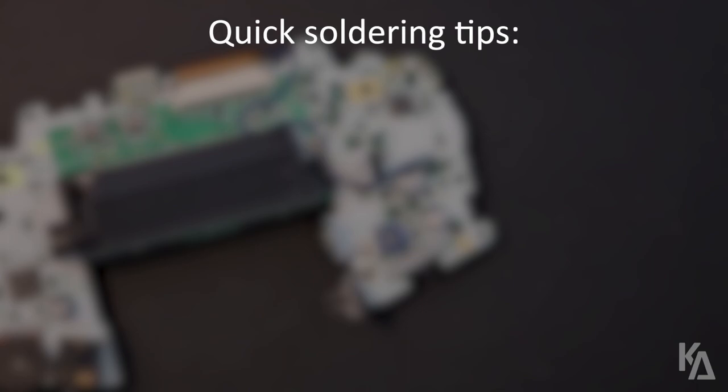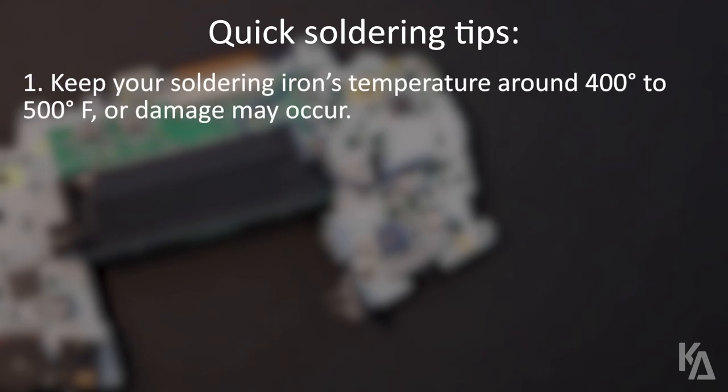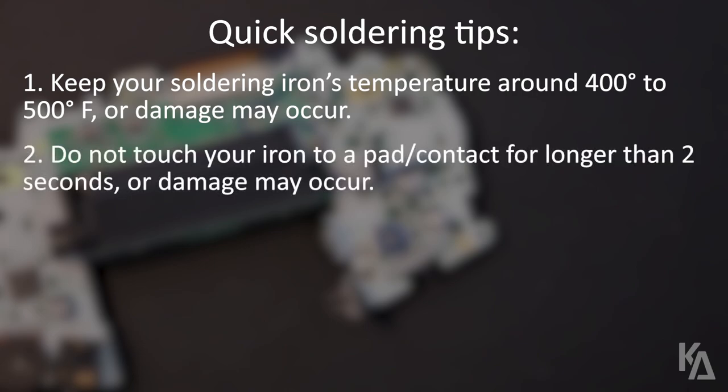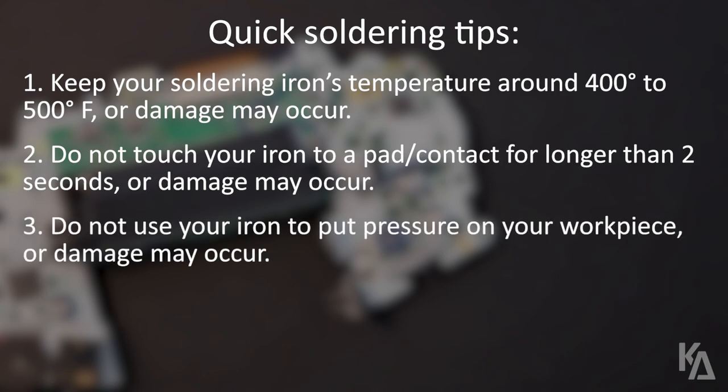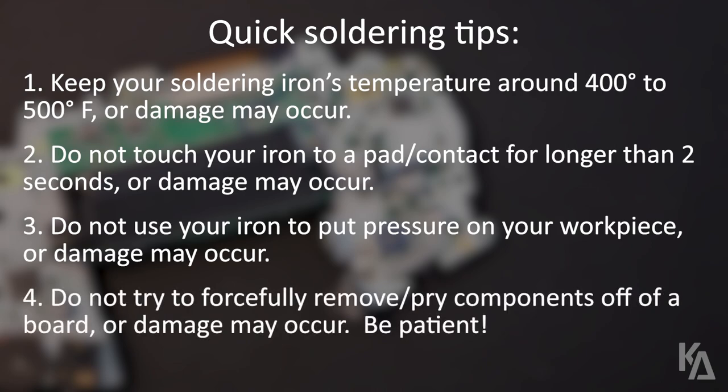Now at this point, we'll begin desoldering the power switch, but I want to mention a few quick tips for this process. First, you'll want to keep your iron's temperature around 400 to 500 degrees Fahrenheit. The finer the tip, the hotter it will have to be to fully melt the solder. Just don't make it too hot. Only allow your hot iron to make contact with the pad for no more than two seconds at a time. The longer you keep it there, the more risk you run of damaging your board. Don't use your soldering iron to put pressure on your workpiece. Doing so could ruin pads and contacts, causing them to rip off. And lastly, don't try to pry components off of your board, or you'll probably rip off the solder pads with them. Just remember to be patient and careful.